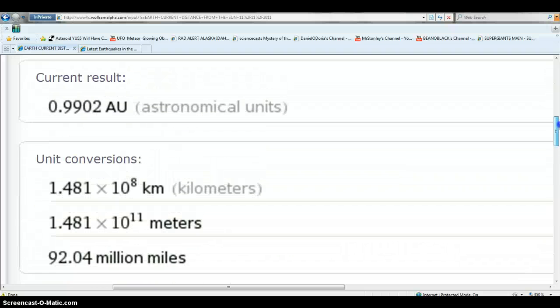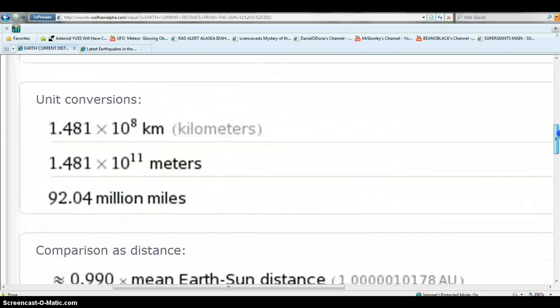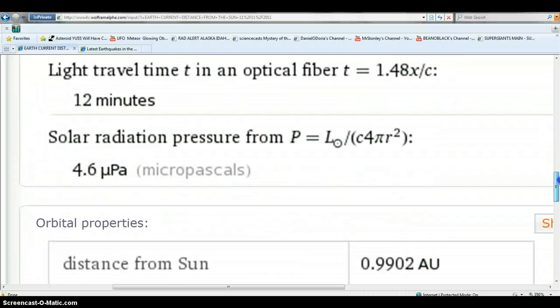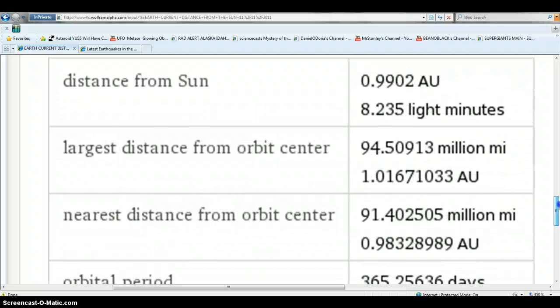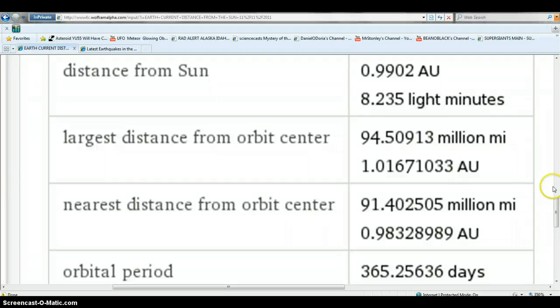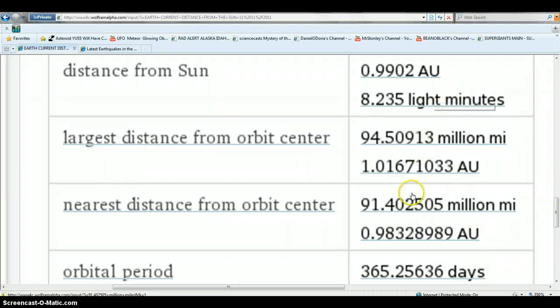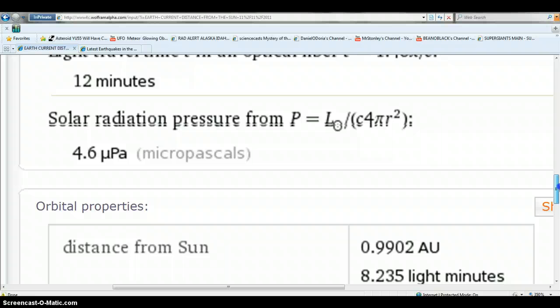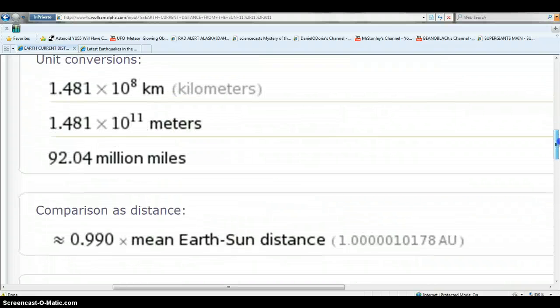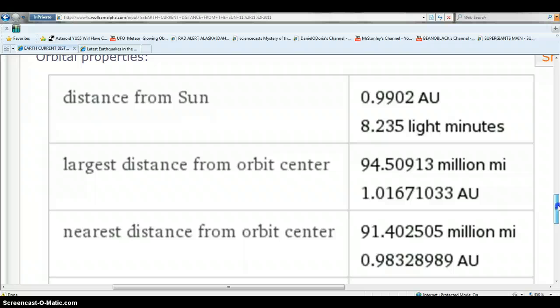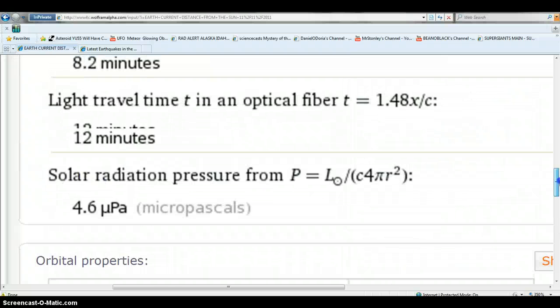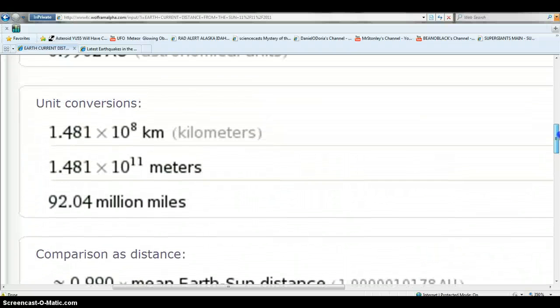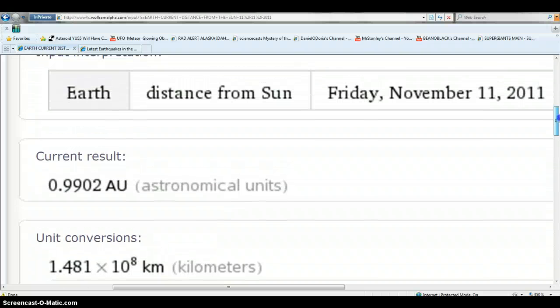Nearest distance we've ever been is 91.402505 million miles. So we are still off of our all-time closeness, but we are working towards - there's our current 0.999 AU, and that current million miles is, this is the closest we've ever been that we know and have record of. Right now we're at 92.04 million miles. So we're not far off the nearest distance ever to the Sun and getting closer. This is our current today.